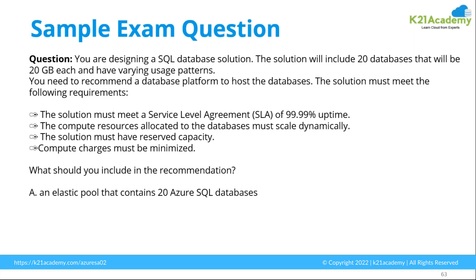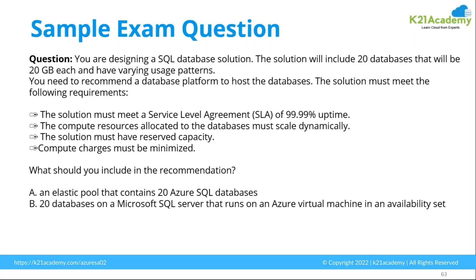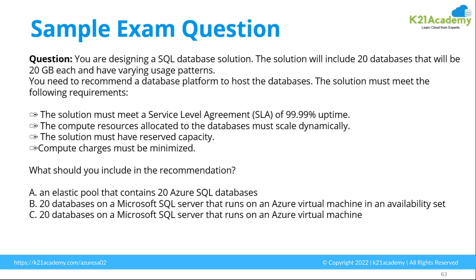What should you include in the recommendation? Your choices are: an elastic pool containing 20 Azure SQL databases; 20 databases on an SQL server — just like a VM with SQL server installed with multiple disks in an availability set with multiple machines; 20 databases in MS SQL server running on Azure virtual machines; or 20 instances of SQL database serverless. If you're on the Azure portal, you can navigate to the elastic pool option and check the choices available.